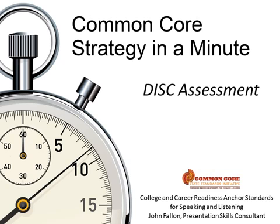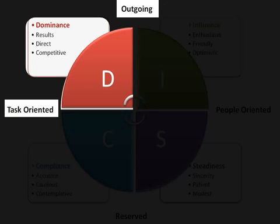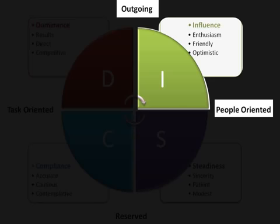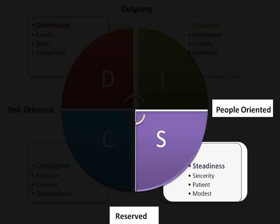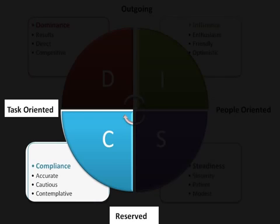DISC is an acronym for Dominance, Inducement, Submission, and Compliance. Dominance relates to control, power, and assertiveness — sometimes the word 'drive' is used in place of dominance. Inducement relates to social situations and communications — sometimes 'influence' is used instead. Submission relates to patience, persistence, and thoughtfulness — sometimes replaced by 'steadfastness.' Compliance relates to structure and organization — sometimes replaced by 'caution' or 'conscientiousness.'